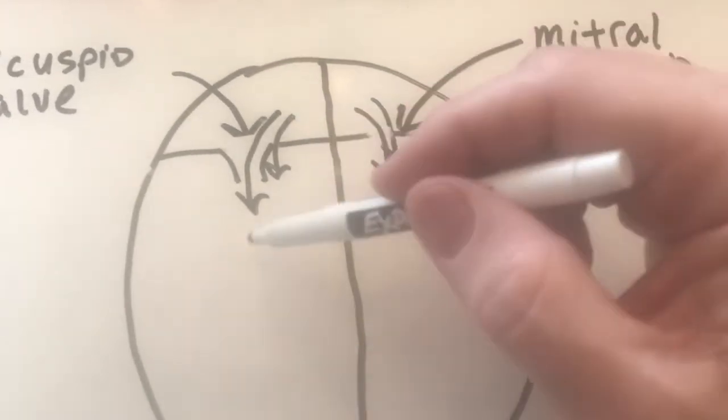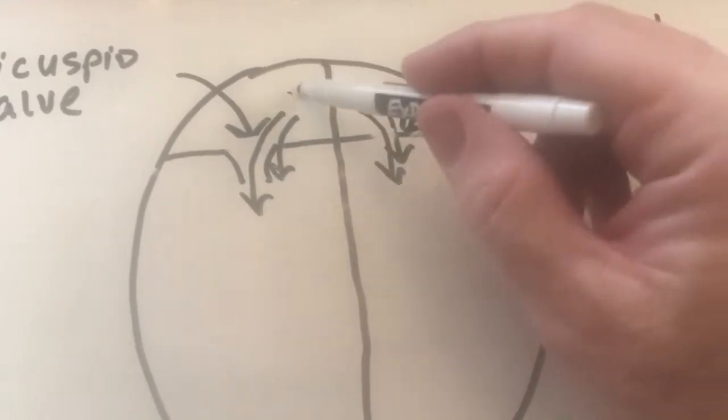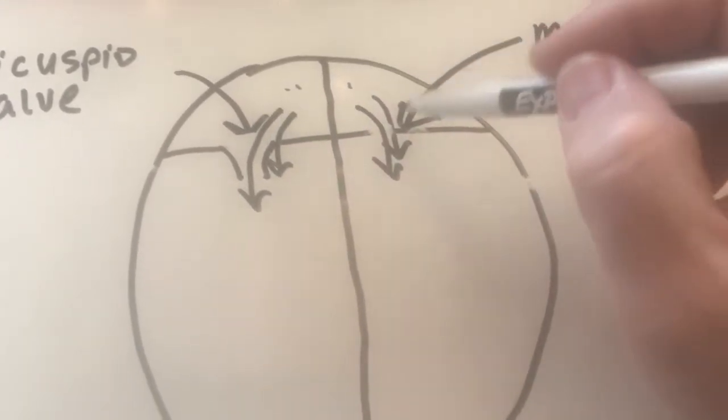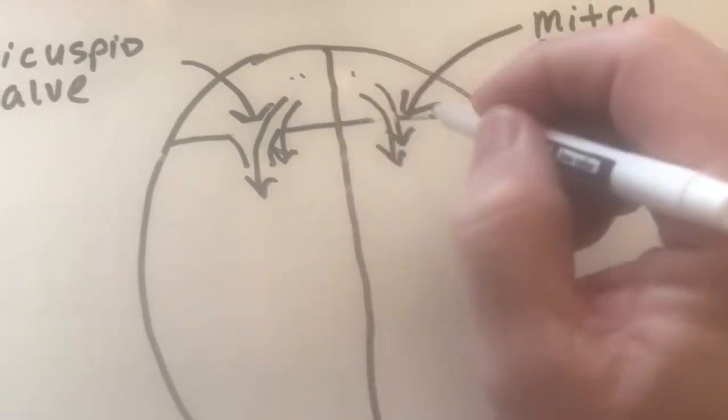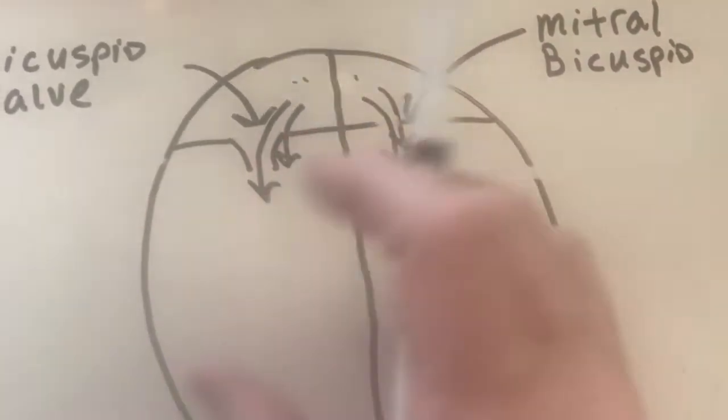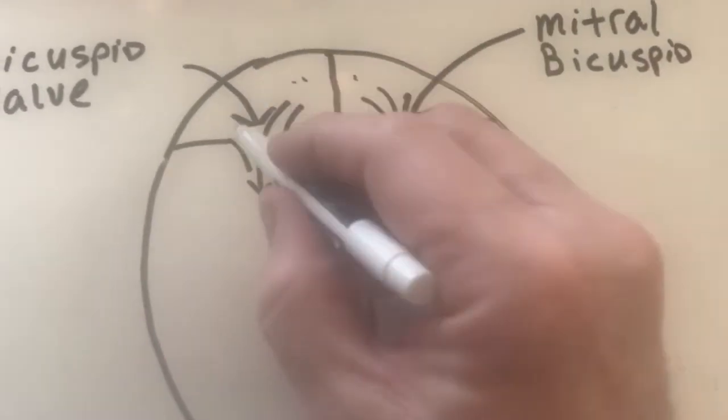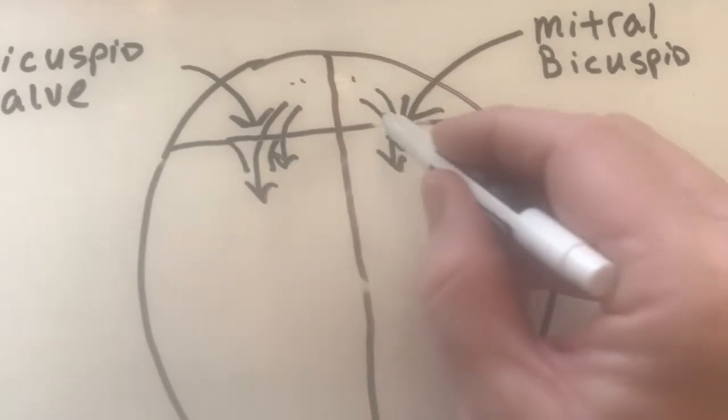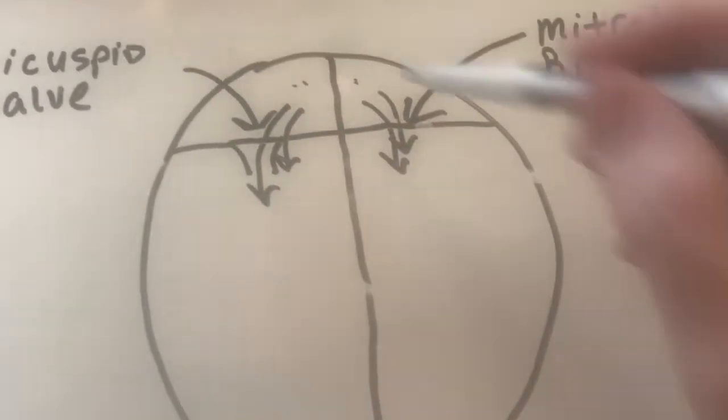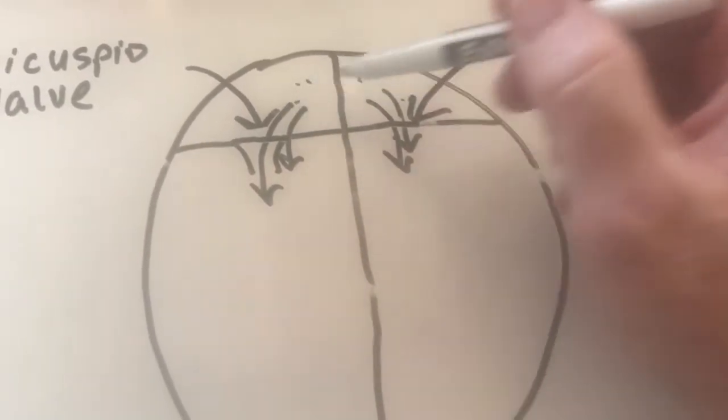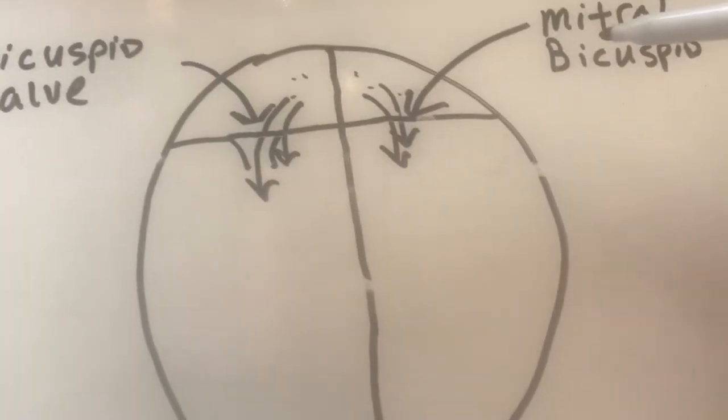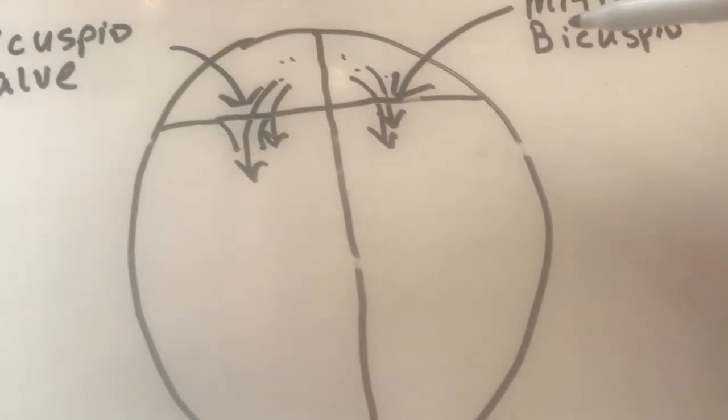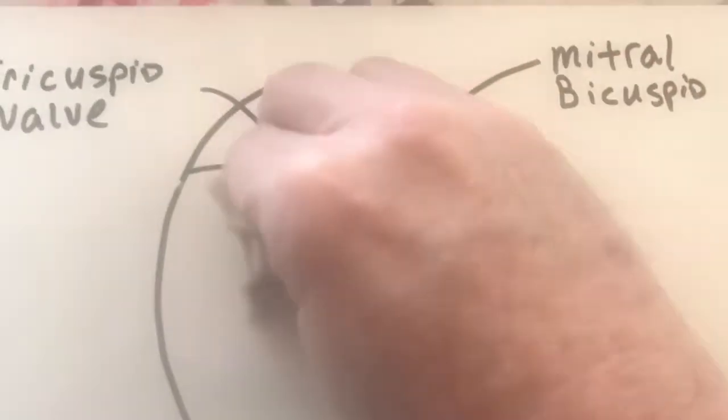So what we can't have is blood going back into the right and left atrium. So what happens is, what your heart does is when the bottom contracts, these valves will actually close. And that will keep blood from going back up into here, back up into the atrium. So how does it keep those from closing? Well, I'm going to erase this real quick.